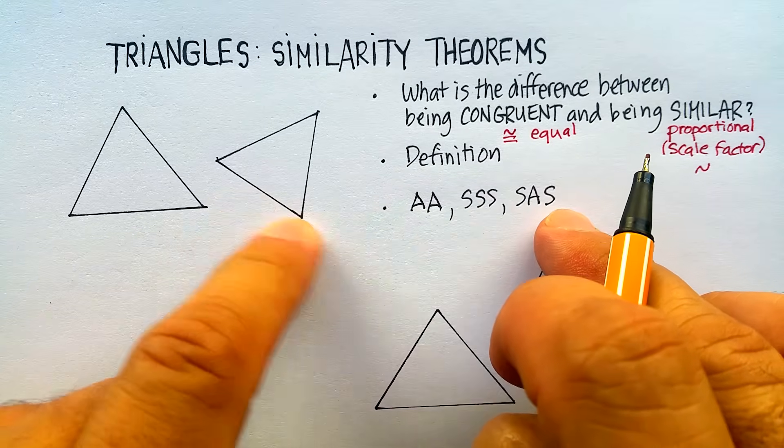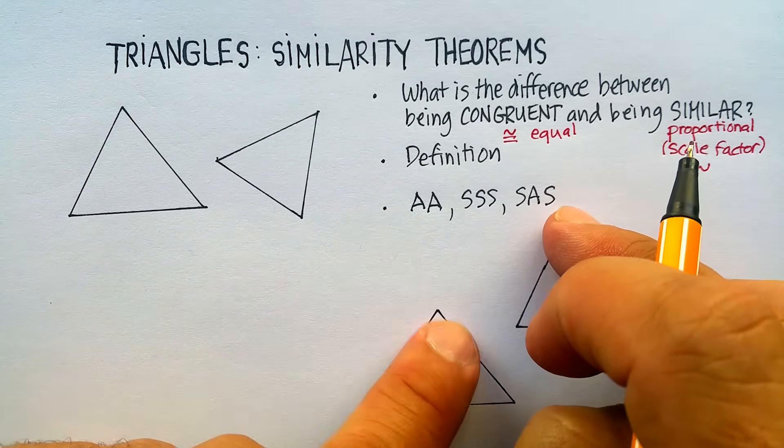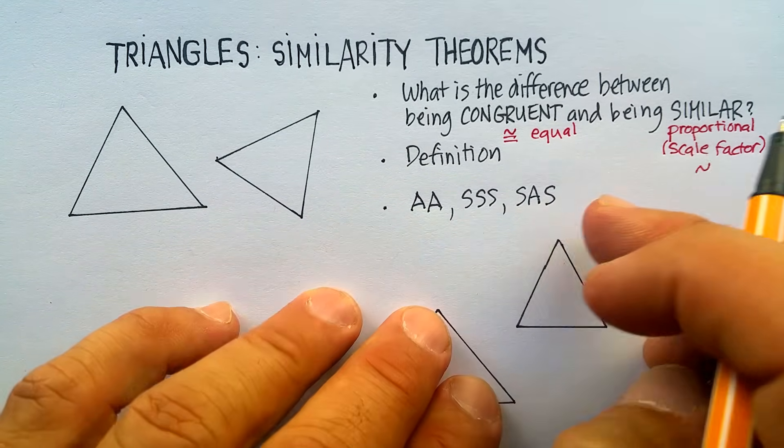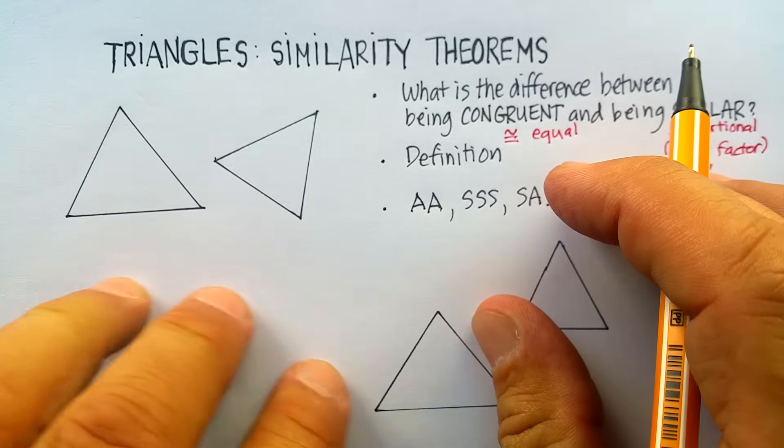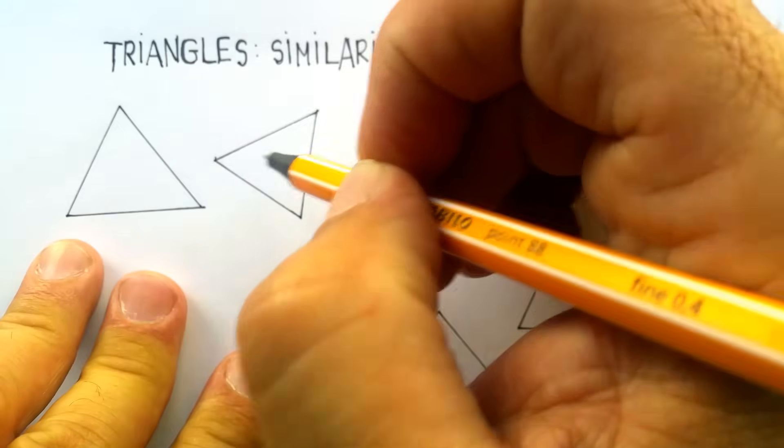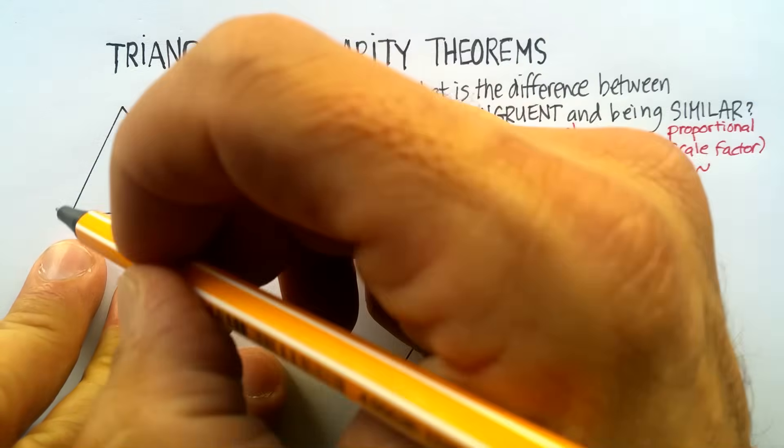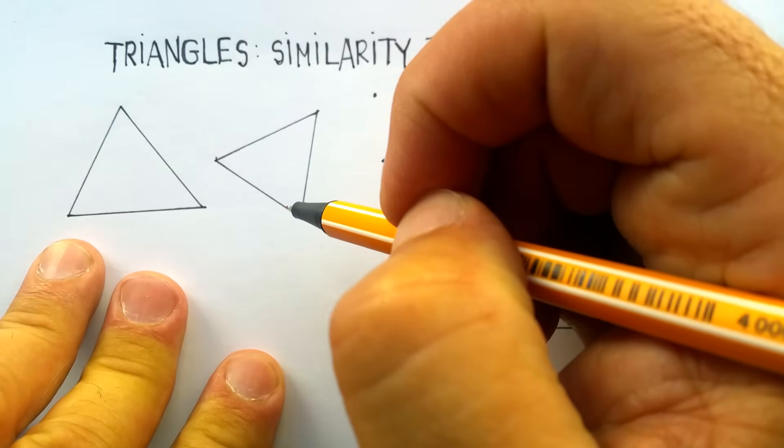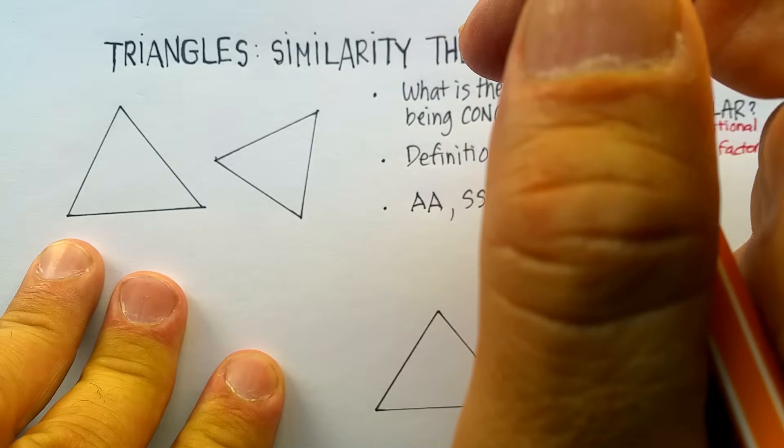So let's go through the three theorems: angle-angle, side-side-side, and side-angle-side, and I'll show you what they look like here. Let's look at this first one. It looks like these are basically the same shape. It looks like they're the same proportions, not dimensions.